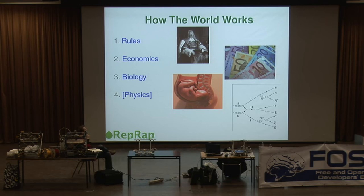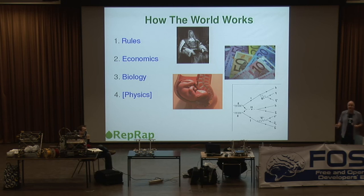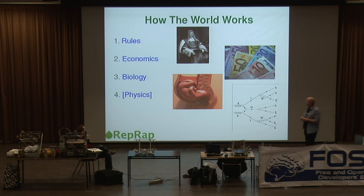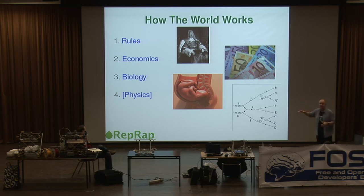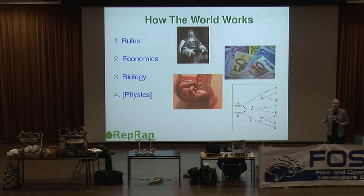Now this is the point where I just start pontificating and waving my arms about — so if you feel like disagreeing with anything I say, please heckle. I contend this is how the world works. There are basically four levels of activity in the world — four levels of constraints on what people do. As you go up higher from one to four, each level trumps the level below. Each level completely dominates the level below.